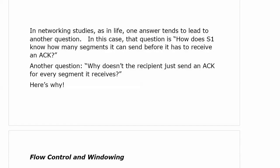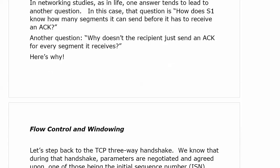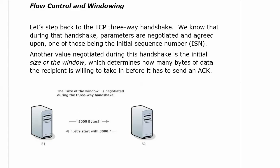The key is just remembering that the acknowledgement is always going to be saying: here's what I expect to see from you next. In networking studies, as in life, one answer leads to another question. The obvious question is: how does server 1 know how many segments it can send before it has to receive an ACK? And why doesn't the recipient just send an ACK for every segment it receives? Well, the reasons are flow control and windowing. Let's go back to the three-way handshake for a moment. Another value negotiated during the handshake is the initial size of the window, which determines how many bytes of data the recipient is willing to accept before it has to send an ACK.